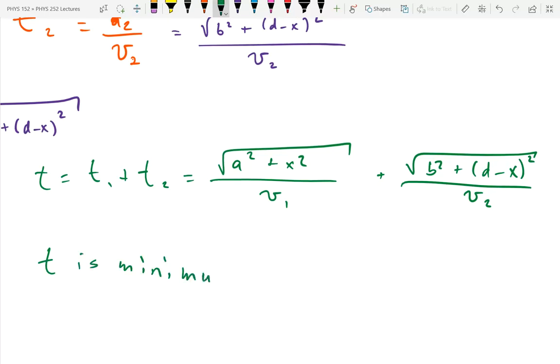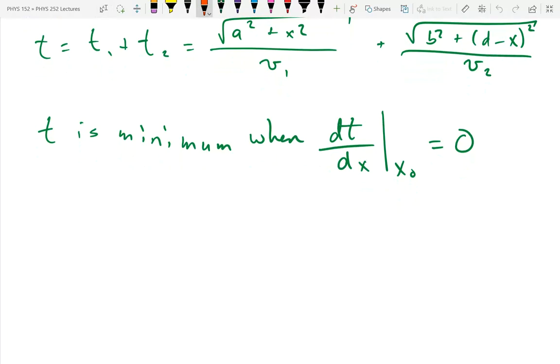Distance one and distance two are variables depending on what X is. So I want to write distance one and distance two in terms of X. Distance one is found using the Pythagorean theorem: square root of a² plus X². Distance two is the hypotenuse with b on one side and d minus X on the other: square root of b² plus (d minus X)². So total time equals T₁ plus T₂ equals square root of a² plus X² over V₁ plus square root of b² plus (d minus X)² over V₂.